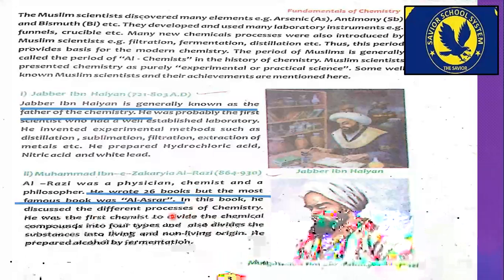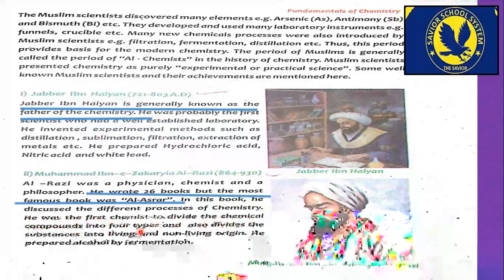In his famous book Al-Asrar, he discussed different processes of chemistry. He was the first chemist to divide chemical compounds into four types and also divide substances into living and non-living. He also classified compounds and elements in different ways. He prepared alcohol by fermentation, just as Jabir bin Hayyan had discovered hydrochloric acid, nitric acid, and white lead.